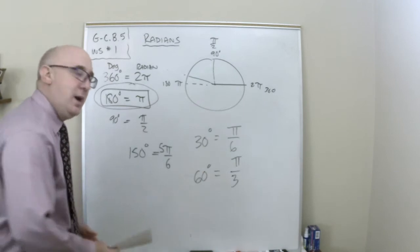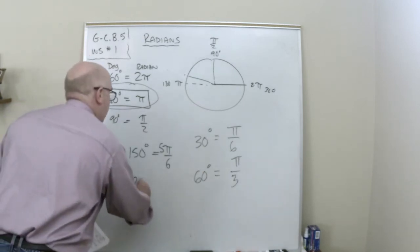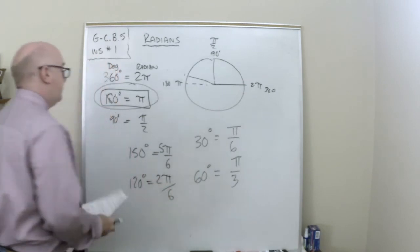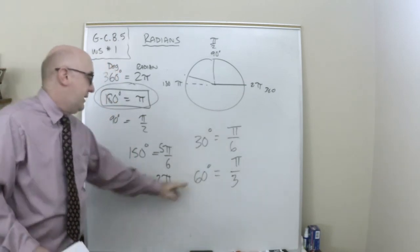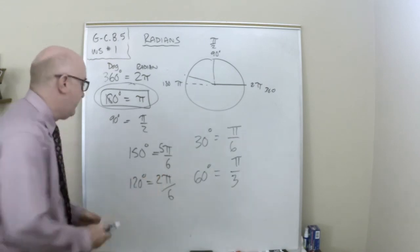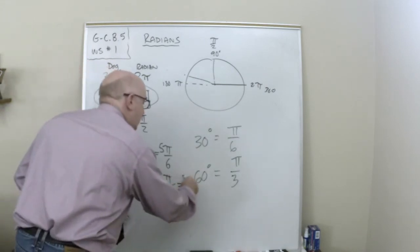How about if I wanted 120? 120. Well, that's two groups. That's two groups of 60, right? 2 pi over 6. That also reduces to, hold on a second. What did I do?